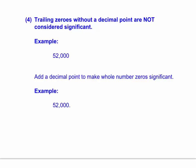They are not measured zeros. So in this case, this number would have two significant figures. The trailing zeros do not count.